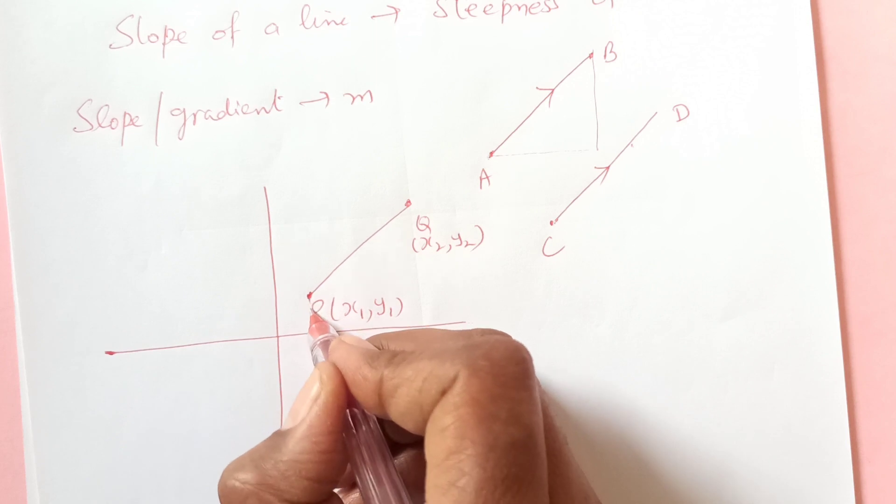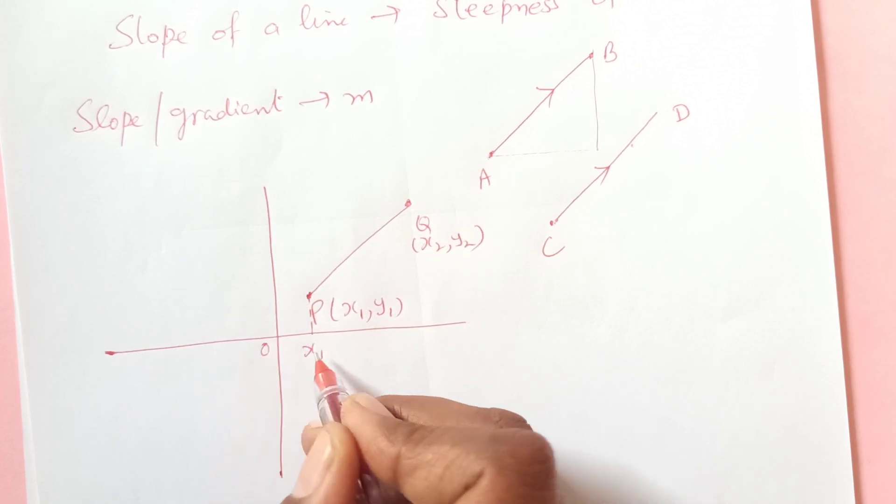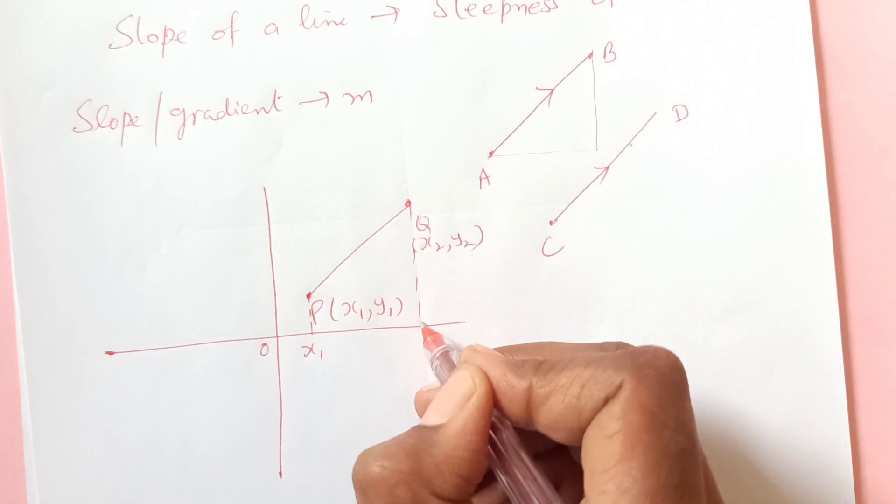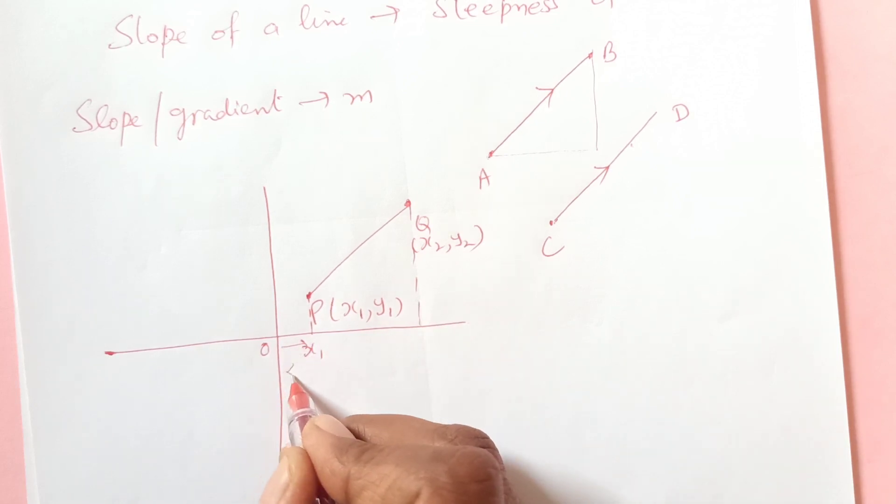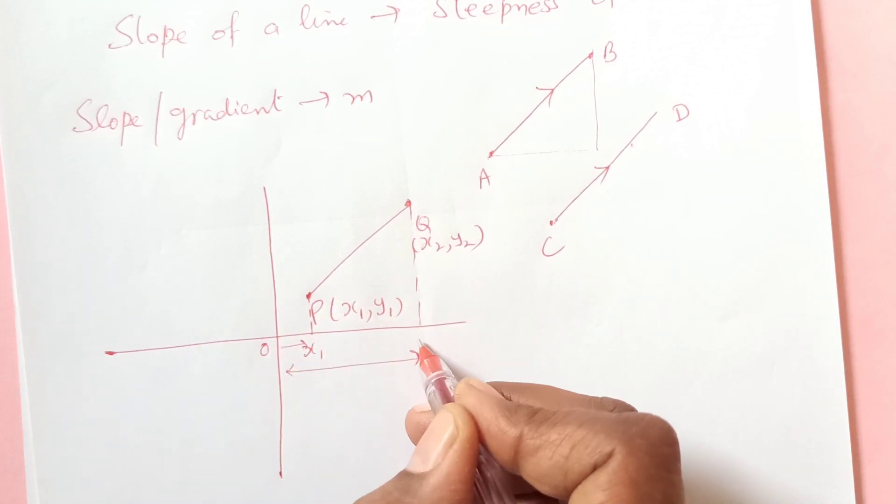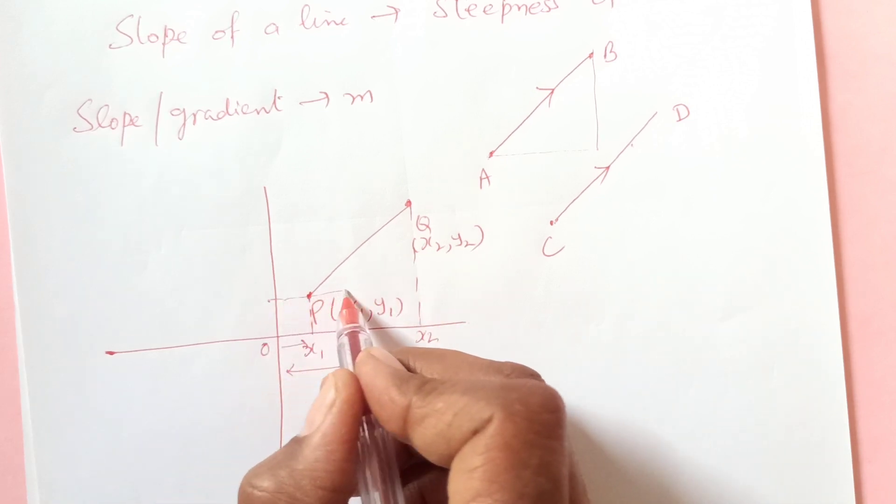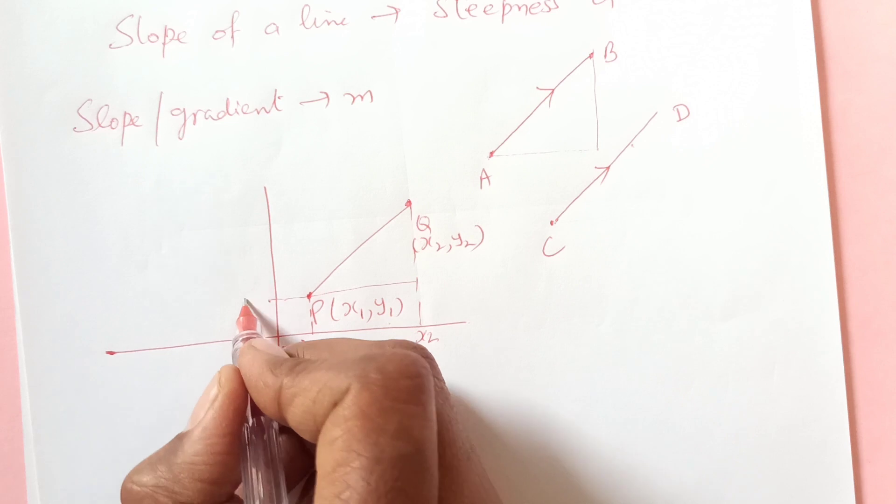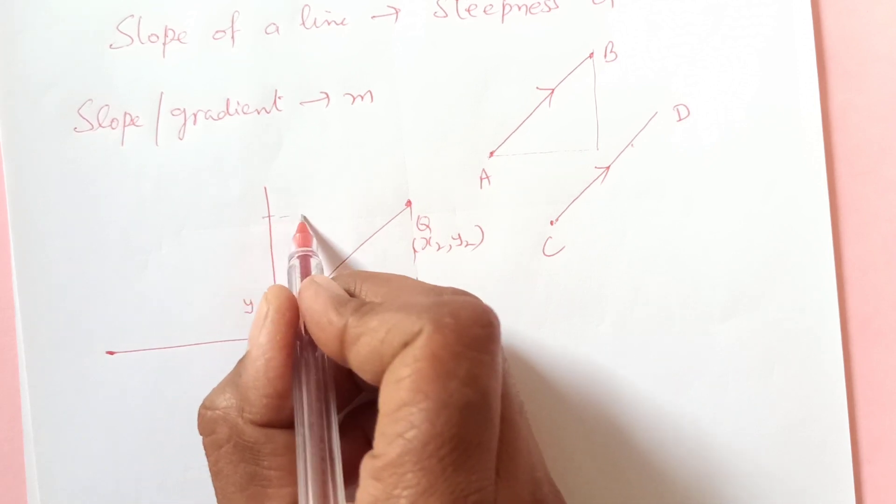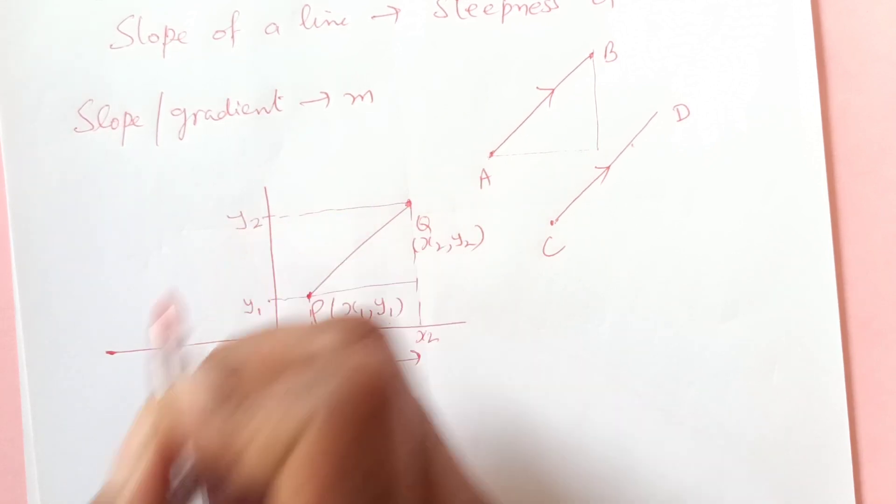Now if you see here up to this point, this one is x1 starting from 0, and this distance from here to here is x2. So now if you move this side, we have here y1, so this is going to be y1 and this is going to be y2.